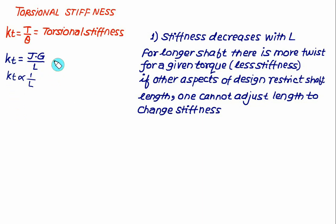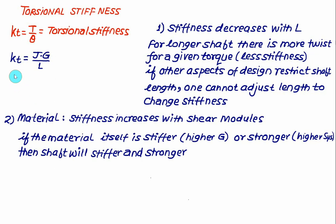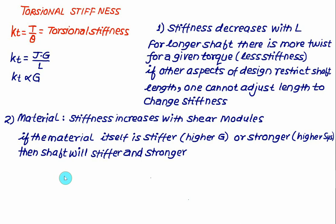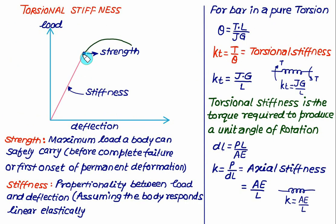Stiffness also depends on the polar moment of inertia J and the modulus of rigidity G, which is a material property. Torsional stiffness is directly proportional to G, so stiffness increases with higher shear modulus. A stiffer material has a higher G value, which also implies a higher yield stress in shear (SYS), making the shaft both stiffer and stronger.